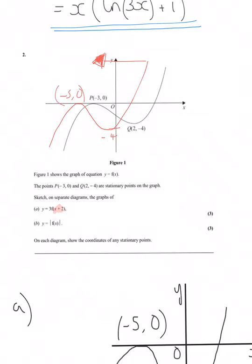We then need to do the transformation of 3 lots of that. What that means is that 3 on the front means multiply every y value by 3. So we're stretching it by a factor of 3 parallel to the y-axis, so our maximum point doesn't move because our y value is 0.